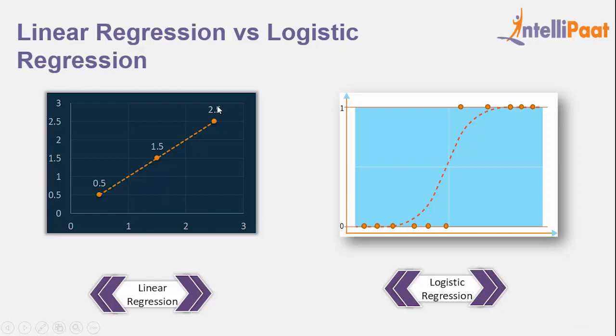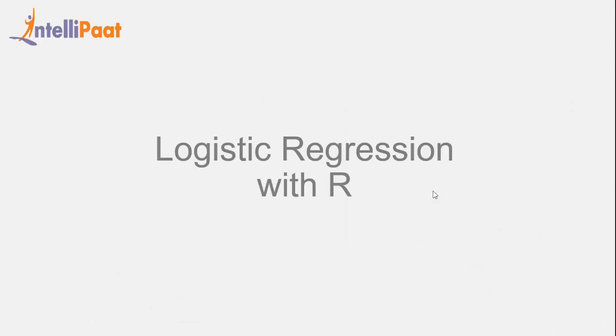In linear regression we have a straight fit line, and in logistic regression we have an S-curve. This S-curve gives us the probability of the result being true or false. It's finally time to implement the concept of logistic regression with R.